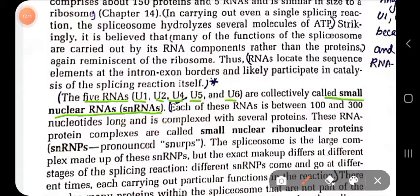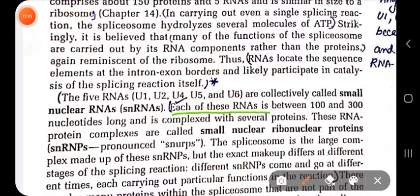The small nuclear RNAs — U1, U2, U4, U5, and U6 — are collectively called snRNA. They are components of the spliceosome machinery; more specifically, they are short nuclear RNAs found within the spliceosome complex. Each of these RNAs is between 100 to 300 nucleotides long and is complexed with various proteins, so these RNA-protein complexes are also called small nuclear ribonucleoproteins, or snRNPs.